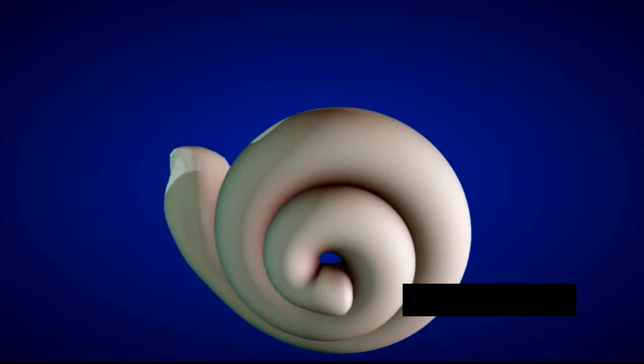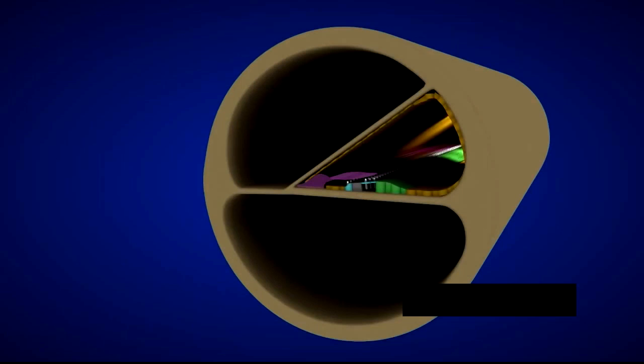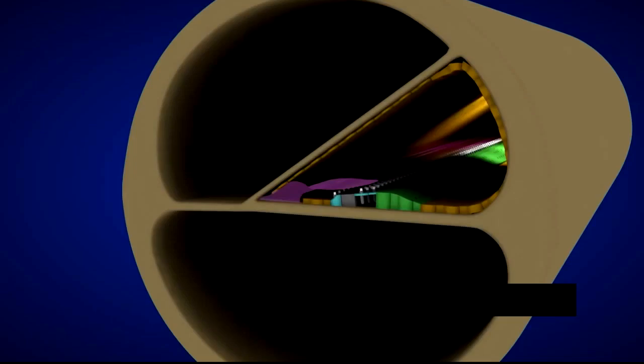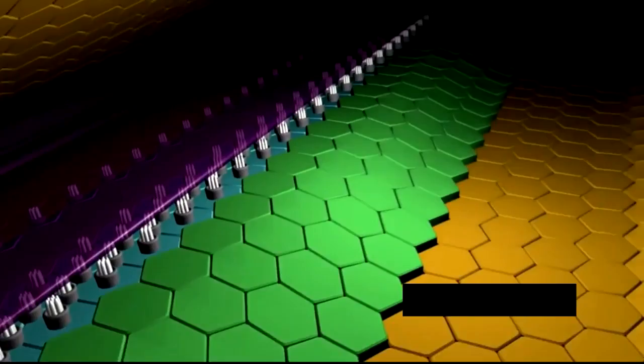It consists of three separate tubes: the tympanic canal, vestibular canal, and the basilar membrane. This basilar membrane contains 20-30,000 weed-like fibers extending across the cochlea, getting progressively longer and more limber towards the end.